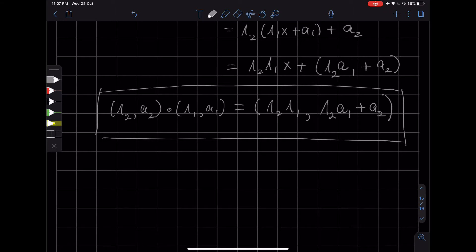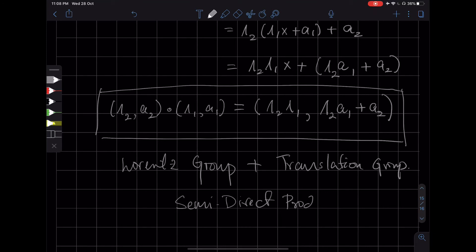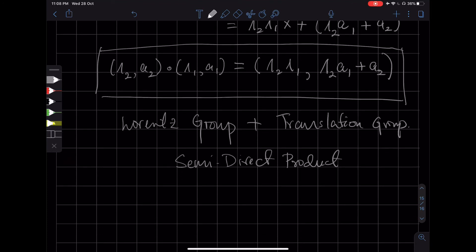And the combination of two groups, the Lorentz group and the translation group, which results in such a group composition law, this combination is called a semi-direct product. So we can say that the Poincaré group is the semi-direct product of the Lorentz group and the translation group.